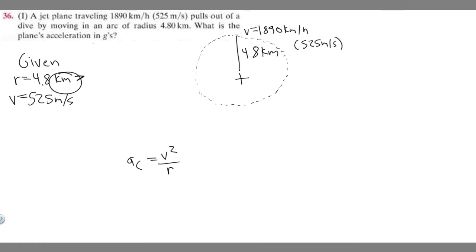So let's convert this to meters. If we have kilometers, we know there's 1,000 meters for every kilometer. So we just multiply this by 1,000, and it's going to be 4,800 meters. And so now we've got it like this. All we have to do is just plug it in.